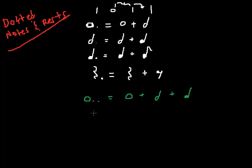So if we had a half note with two dots, that would be a half note plus a quarter note, just like above. Plus, the second dot is going to take half of the first dot and add it onto it. So it's going to be plus an eighth note, and so on. You get the picture, right?